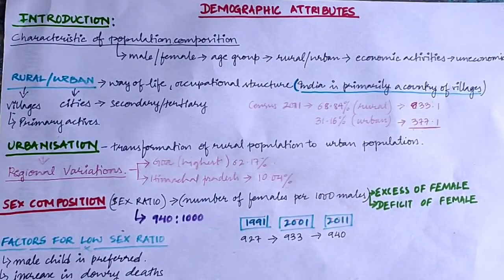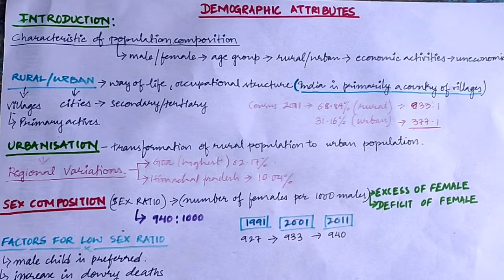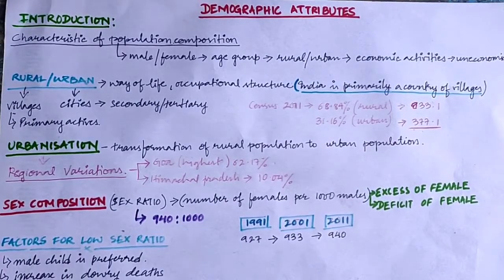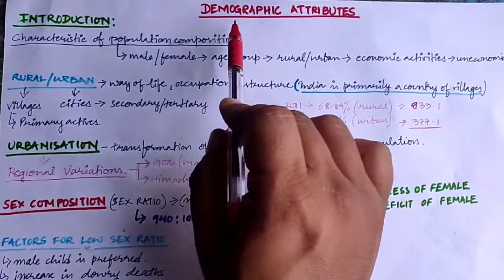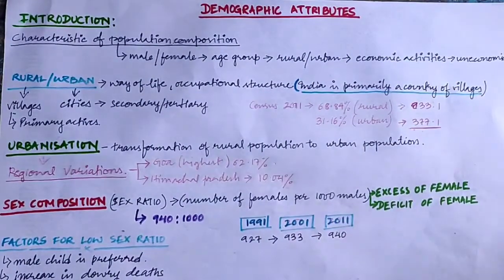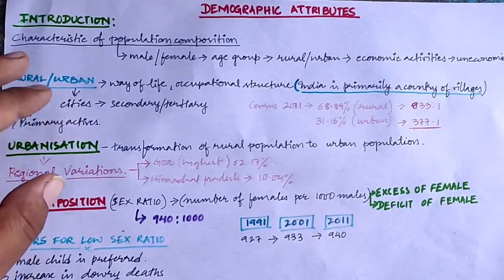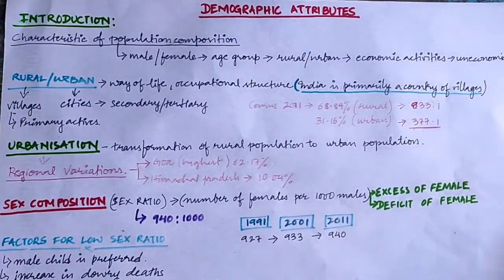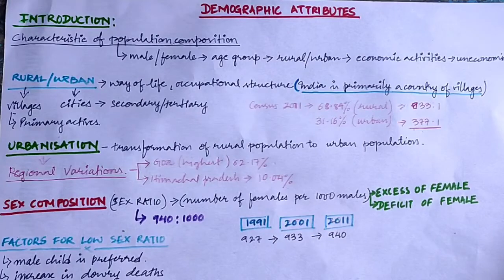Welcome students. Today the topic we are going to start with is demographic attributes. Two different terms are used here: demography and attributes. Demography means population and attributes mean its characteristics. So in simple terms, the characteristics of the population composition can be termed as demographic attributes.